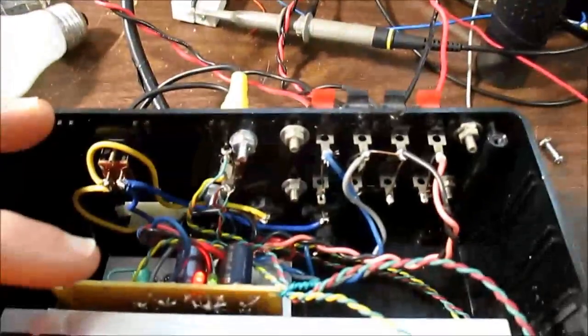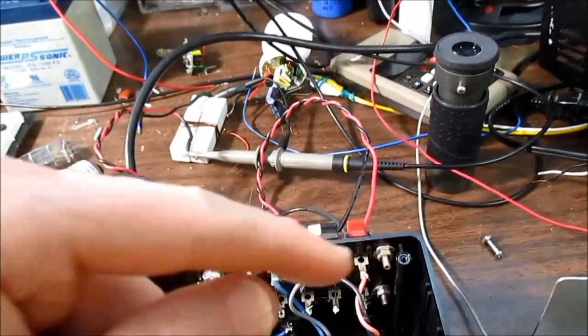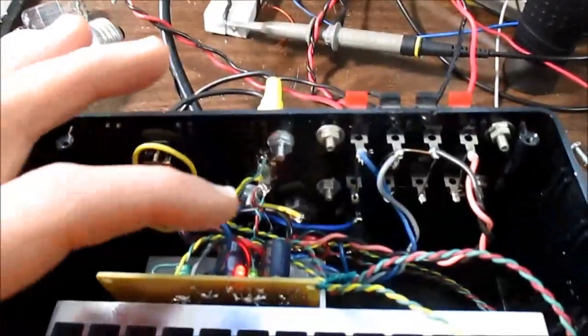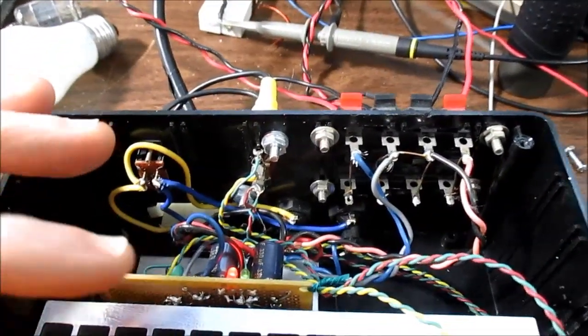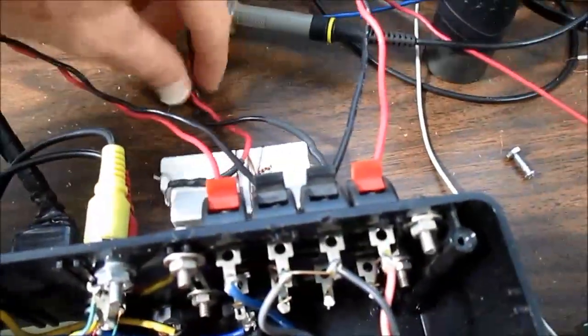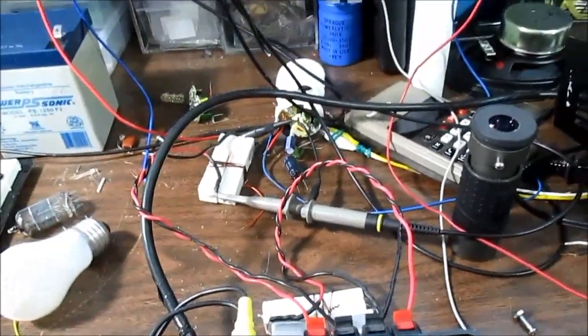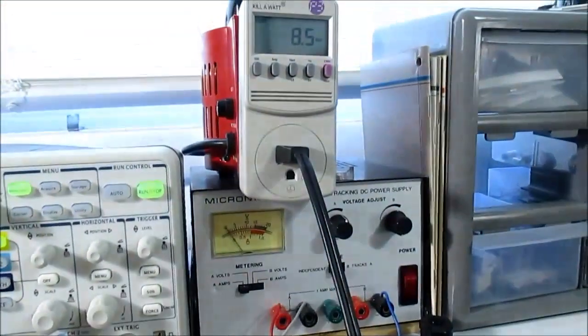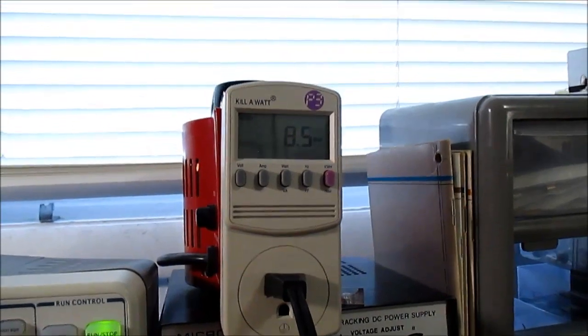Well, why does that happen? Well, because the amplifier, even though it's not swinging to the rails, there's still a big voltage drop across those output transistors that have to be dissipated. Because even though we're not dissipating a lot in our loads, there's still that big overhead. So yeah, just delivering 1 watt continuous causes us to draw that much power.